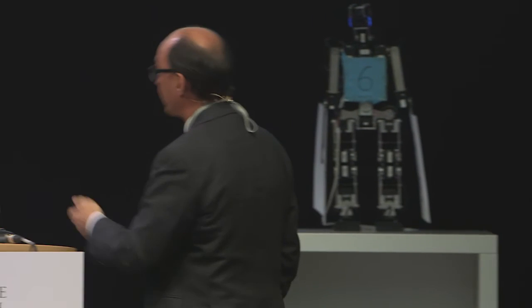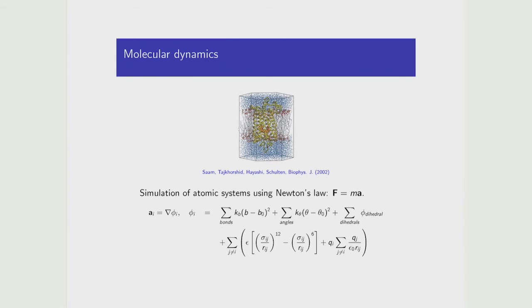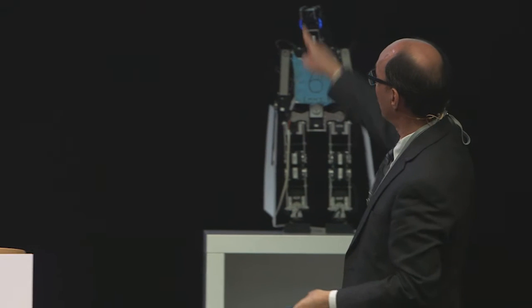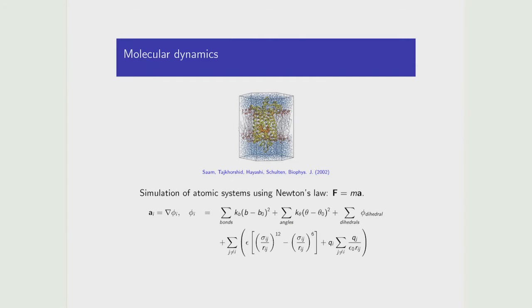In molecular simulations, if you use this kind of formulation for moving atoms around, all of the interactions are local except for the electrostatic interaction. The very last term has Q divided by R, and R is a very slowly decaying force. All of the other forces decay very rapidly — so electrostatics dominates the computation.